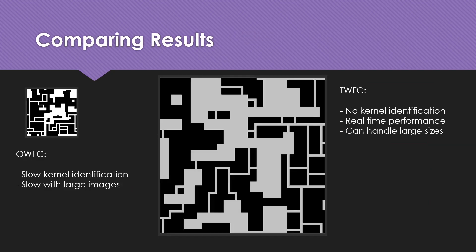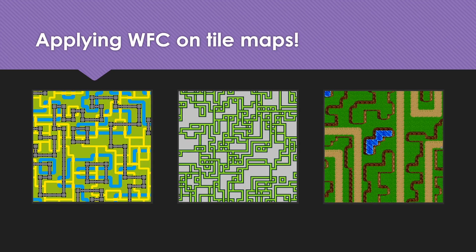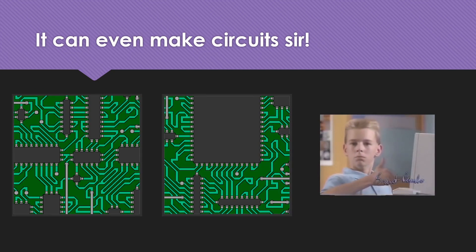When we compare overlapping wave function collapse and tiling wave function collapse, OWFC has a very slow kernel identification process and generates output slowly with larger images. In the case of TWFC, however, there is no kernel identification step, which allows for a real-time performance algorithm. It can also handle large image sizes because all the complexity is left to tiling. Applying WFC on tile maps gives results with a lot of detail and intricate shapes — it can even make circuits.